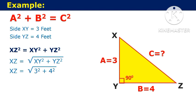We get XZ = √(3² + 4²), which can be written as XZ = √(9 + 16). XZ = √25, which equals 5 feet.